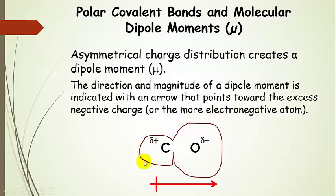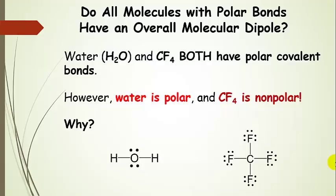This can be a bond dipole, and in the case of carbon monoxide, it would also be a molecular dipole. We want to discuss molecular dipoles and how to find them. The key question is: do all molecules with polar bonds have an overall molecular dipole? The answer is no — sometimes a molecule can have polar covalent bonds but still not have an overall molecular dipole. Let's look at water and carbon tetrafluoride as examples: water is polar, carbon tetrafluoride is nonpolar.